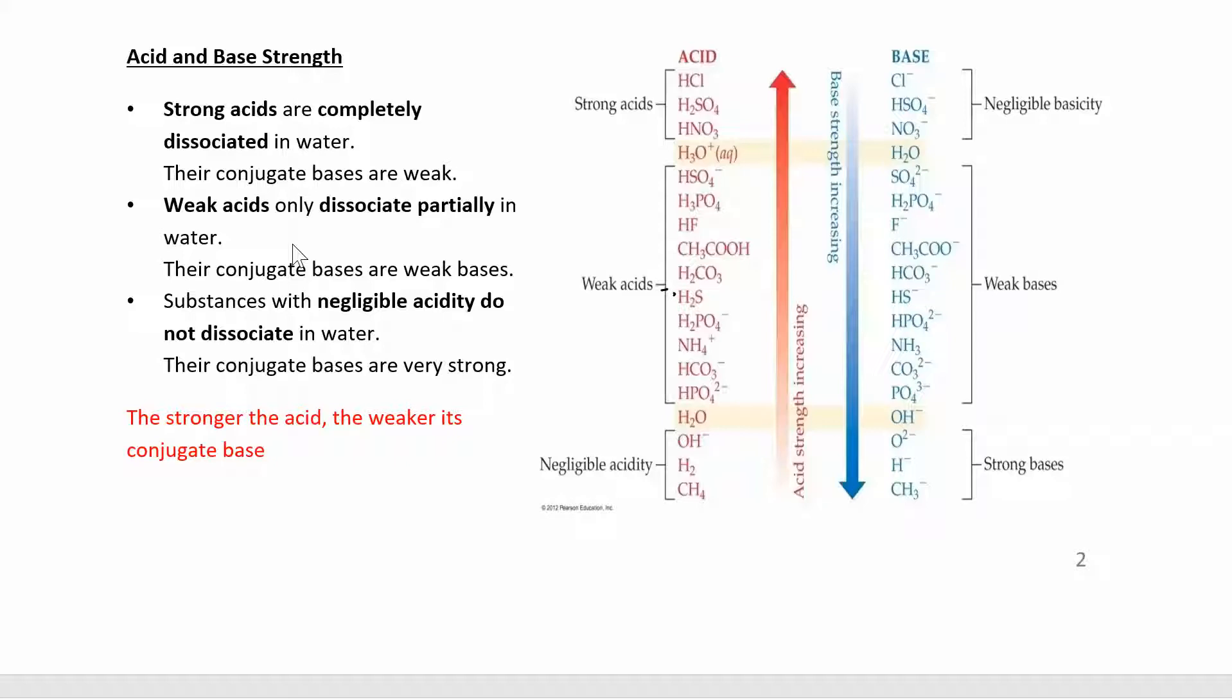And then you have weak acids that only partially dissociate. So if you had like 100 of those weak acid molecules, maybe one or two of them actually dissociate into ions. You only make a little bit of hydronium, a little bit of your conjugate base, but most of it stays in its molecular form.